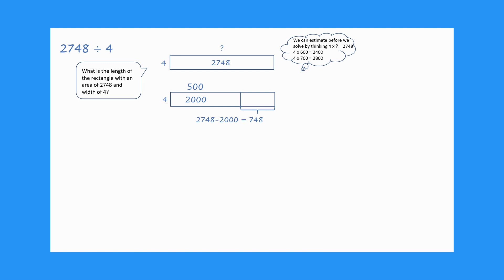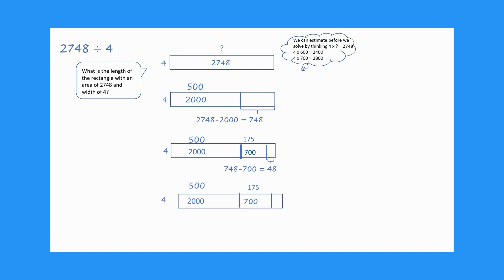We now think: how many are in 4 groups that total 700? There are 4 groups of 175 in 700. We partition our rectangle to show the area of 700 and label the partition length 175. We then take 4 groups of 175, or 700, from 748, which equals 48. Now we think: how many are in 4 groups that total 48? We use the inverse relationship of multiplication to know that 4 groups of 12 equal 48. We label the last area of our rectangle 48 and the last length 12. We then add up our side lengths to get the total missing side length of 687, which is reasonable according to our estimate.